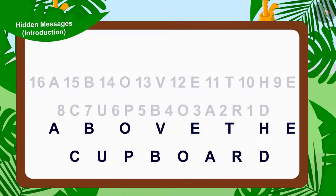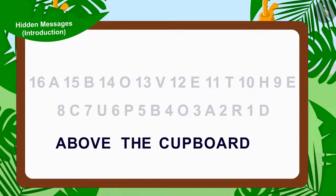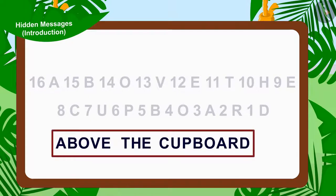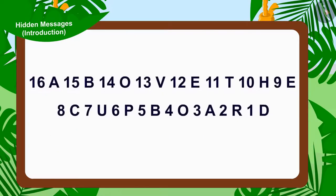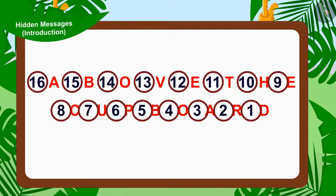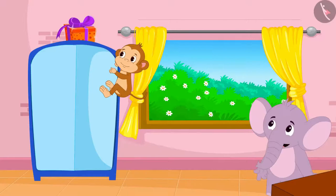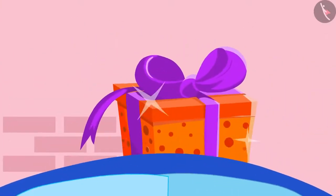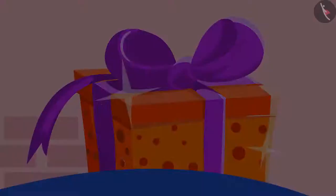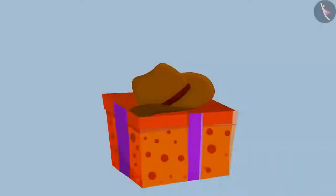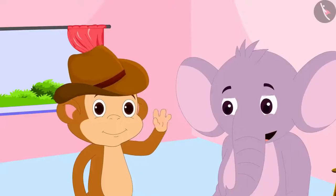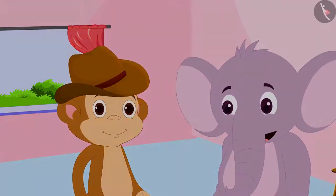Yes! The hidden message here is 'Above the cupboard.' This too is a hidden message made from alphabets. Here, Appu has hidden the alphabets in between the numbers such that there is one alphabet written after every number. When Baban quickly jumped on top of his cupboard, he saw a gift wrapped in shiny paper. Appu had actually hidden a cap as a gift for him there, and Baban was very happy to get his new cap.